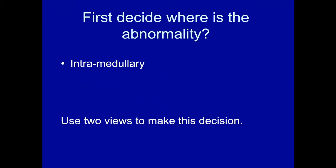The first question you want to ask as you look at imaging is: where is the abnormality? The compartments traditionally defined are intramedullary — meaning the abnormality involves the spinal cord itself, which is expanded, has abnormal signal, has enhancement — this involves a primary disease of the spinal cord. Then we consider disease outside the spinal cord but inside the dura: the intradural extramedullary compartment. Most often these are things like drop metastases and meningiomas.